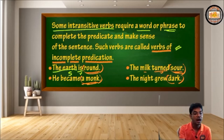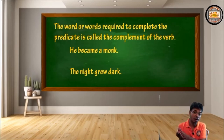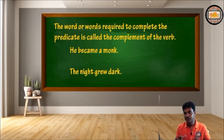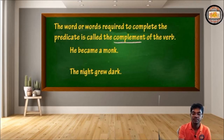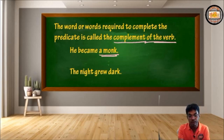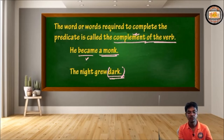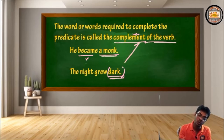The word or words required to complete the sense of the predicate — that is, to complete the sense of the verbs of incomplete predications — they are called complement. We call them complement of the verb. So in 'He became a monk,' the phrase 'a monk' completes the sense of the verb — that's why it's a complement. In 'The night grew dark,' 'dark' helps the verb to complete its sense — so it is also a complement of the verb.